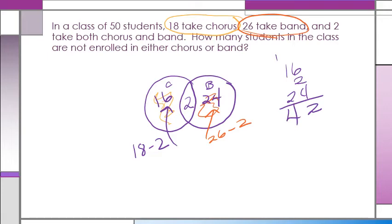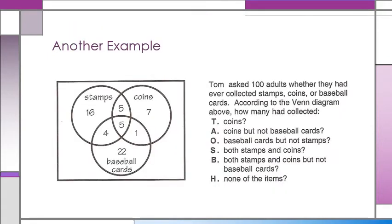Now, how many take neither? So everything combined, we've got 16, 2, and 24. If I add that up, I've got 42 students that take either chorus or band, or both. And I've got a total class of 50 people, so 50 minus 42 take neither, or 8 take neither band nor chorus.